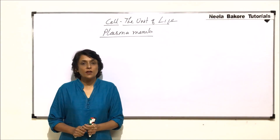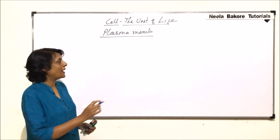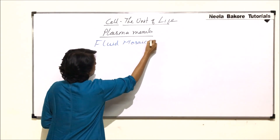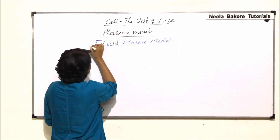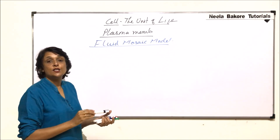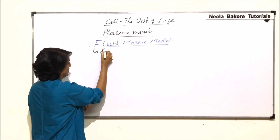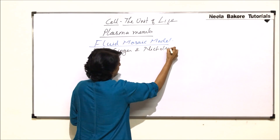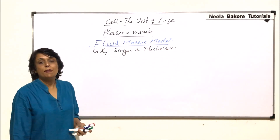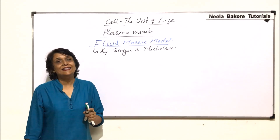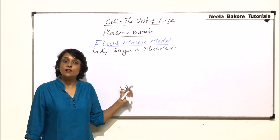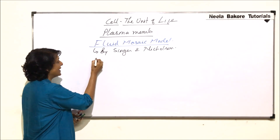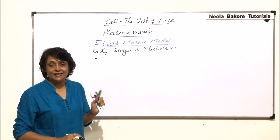In this video we are talking about another model of plasma membrane — the fluid mosaic model. This model was proposed by Singer and Nicholson. Singer and Nicholson used the basic information which was given by Daniele and Davson, but their interpretation was totally different. We will take up all the points which were given by them using the information of Daniele and Davson.